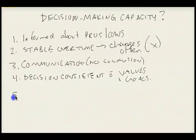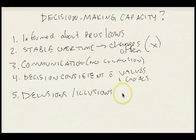The last criterion for decision-making capacity is, is a decision made without the presence of delusions or illusions. If you detect that there's a presence of delusions or any type of hallucinations, this indicates that the patient is not 100% sound of mind.